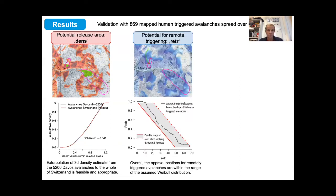The simulation for remote triggering was compared with a small dataset of 30 locations where avalanches were triggered below the slopes. The resulting values of these locations are in the range of costs from the applied Weibull function.